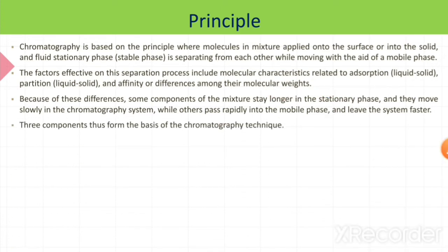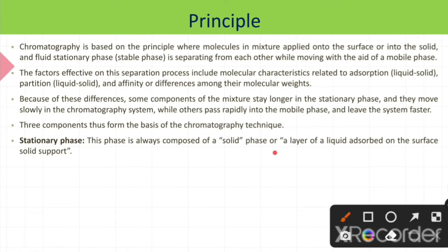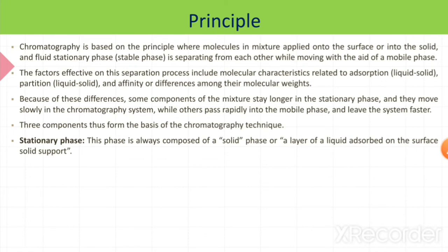Three components thus form the basis of chromatography technique. First one is stationary phase. This phase is always composed of solid phase or a layer of liquid adsorbed on the surface of solid support. Basically we are saying solid phase. Mobile phase is nothing but liquid. For example, solvent.